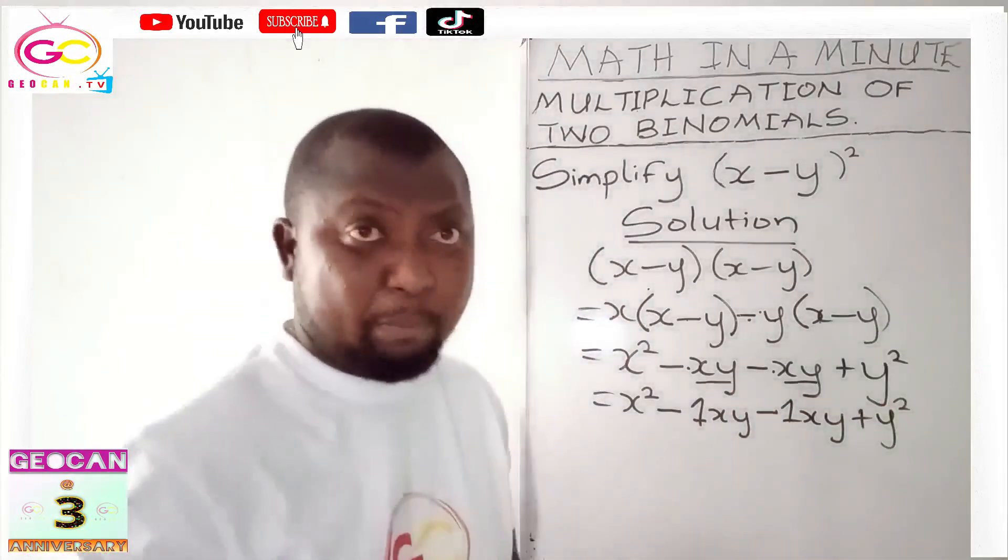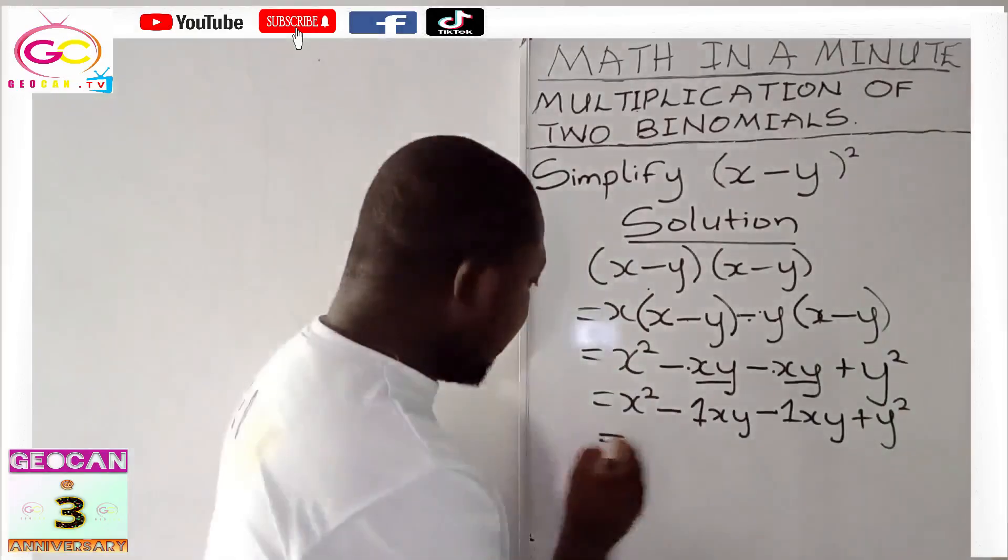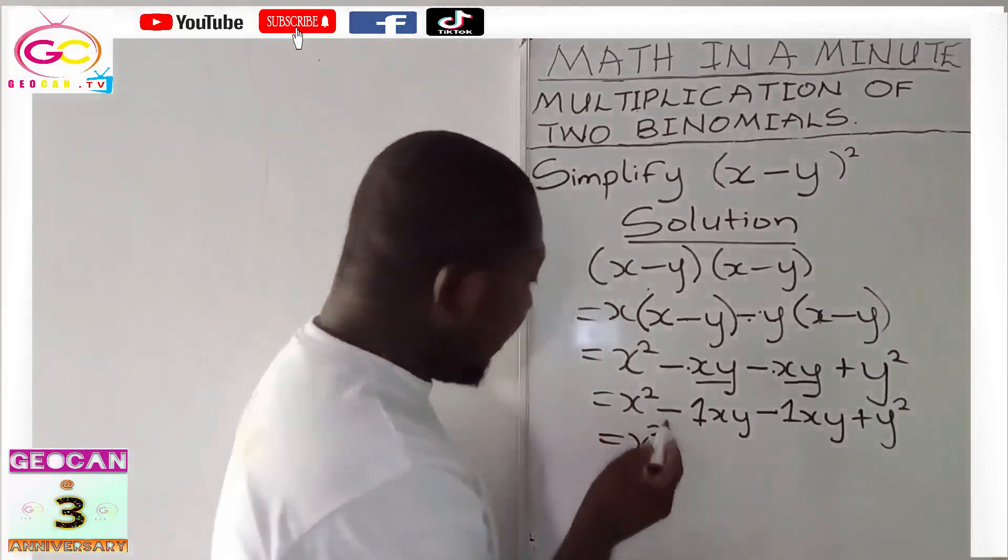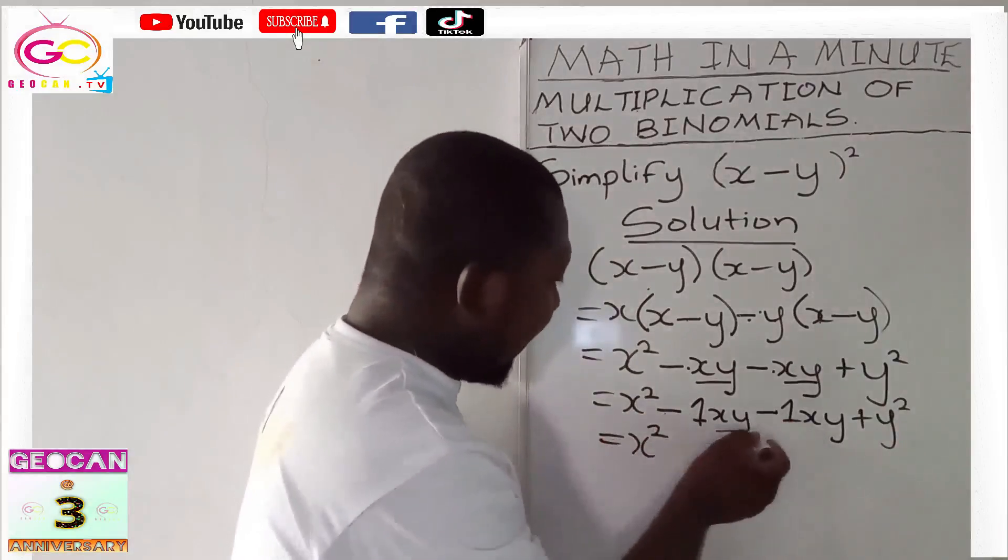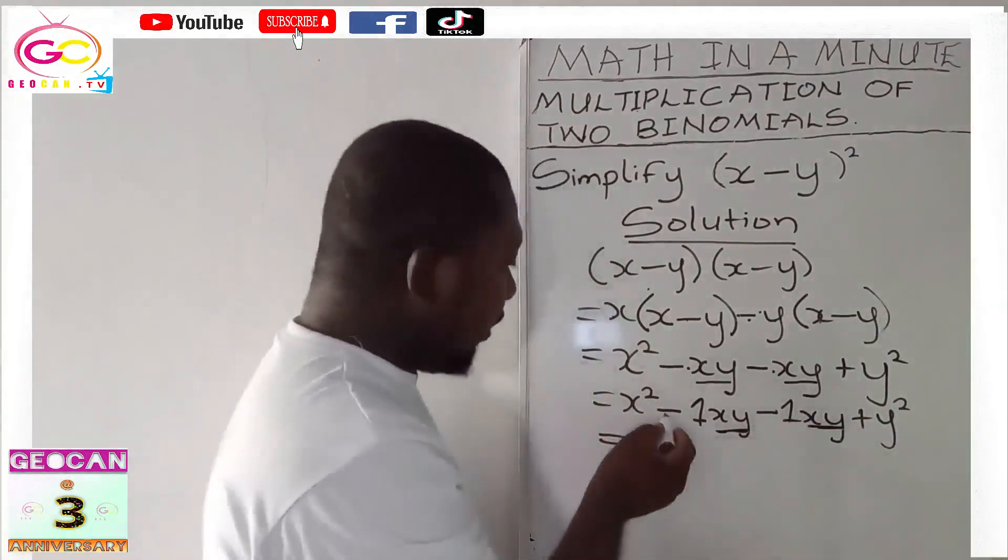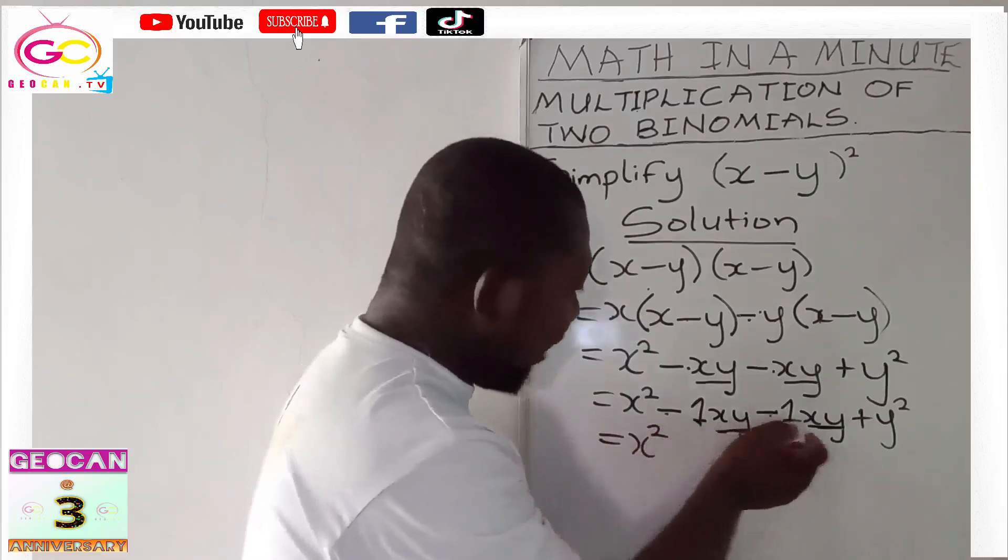So it's equal to x². Now negative one minus negative one—these are like terms, xy and xy. So -1xy minus -1xy.